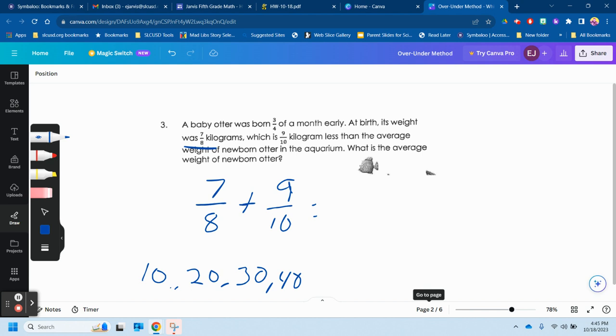So I'm going to rewrite seven-eighths as something over 40. What did I multiply that eight by to get 40? I multiplied it by five. So I also multiplied the numerator by five and I get 35 fortieths. So I basically multiplied seven-eighths by one as represented by five-fifths.